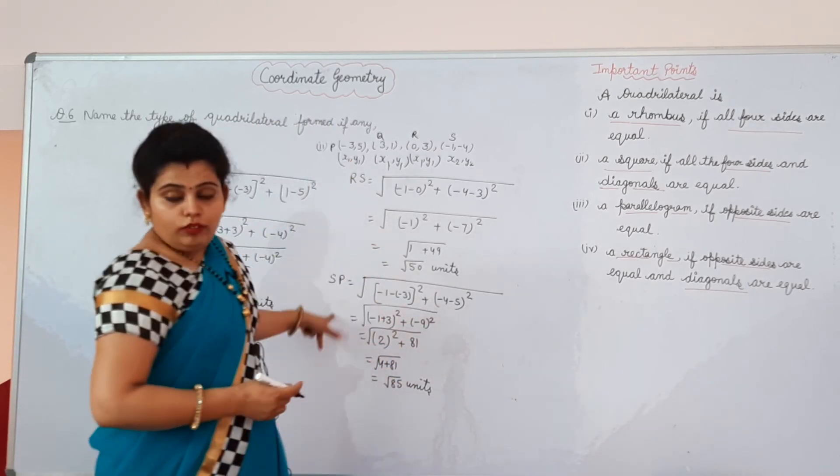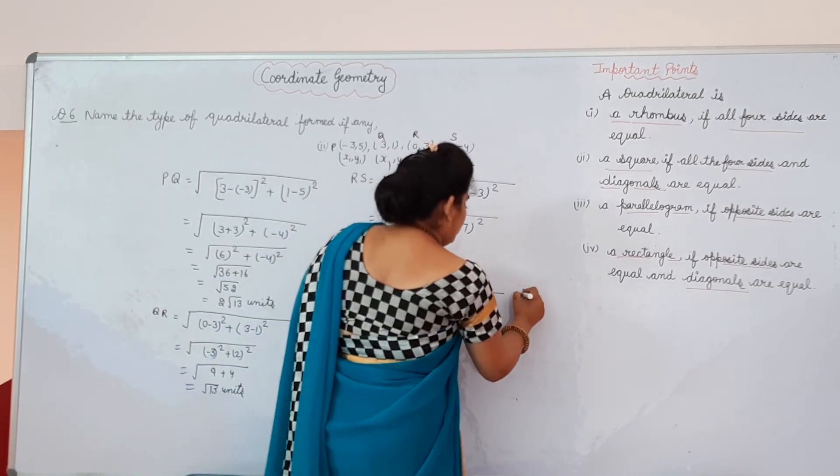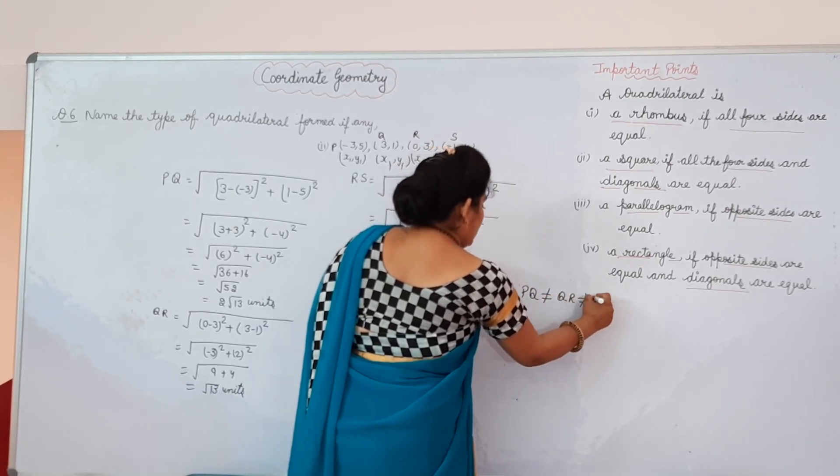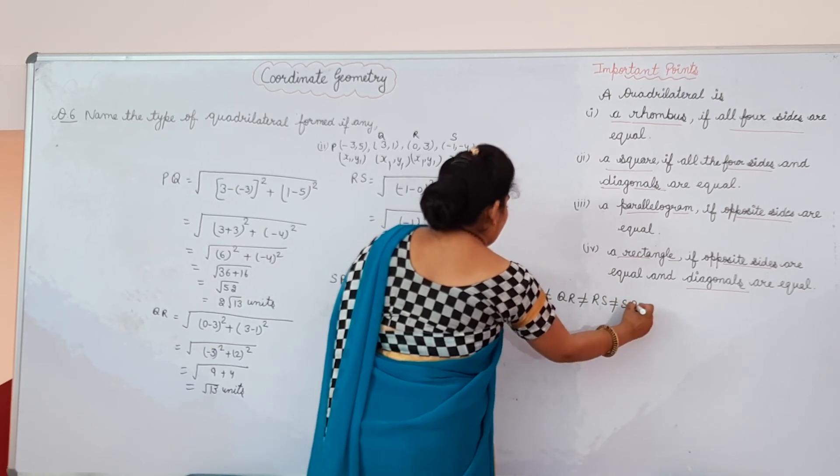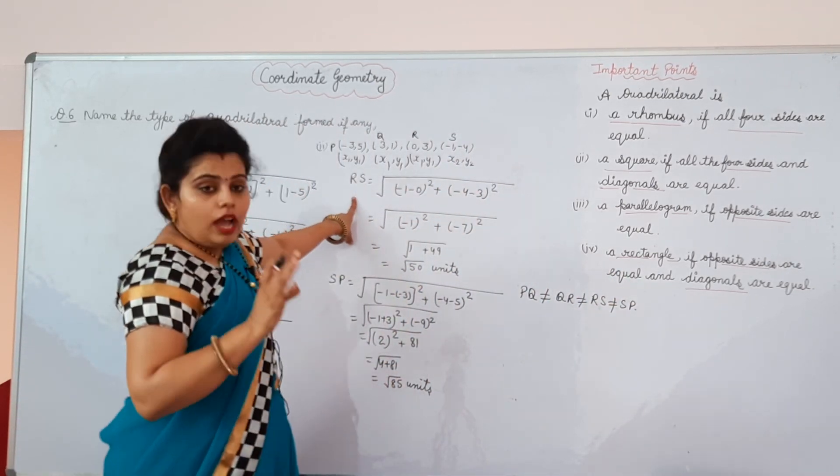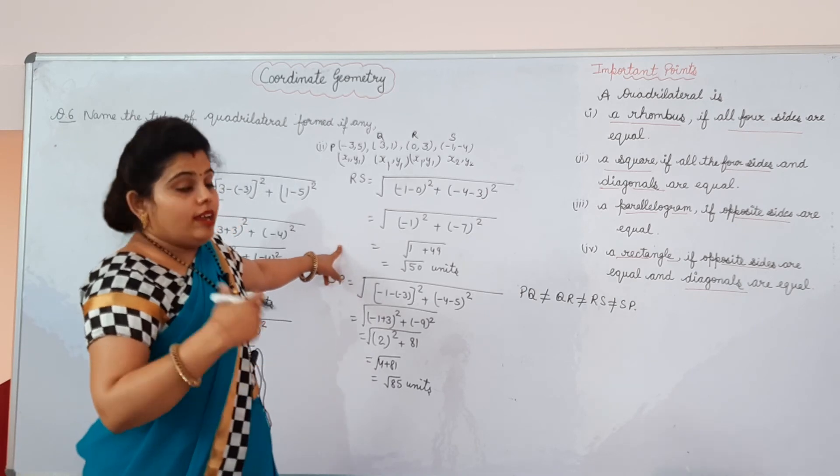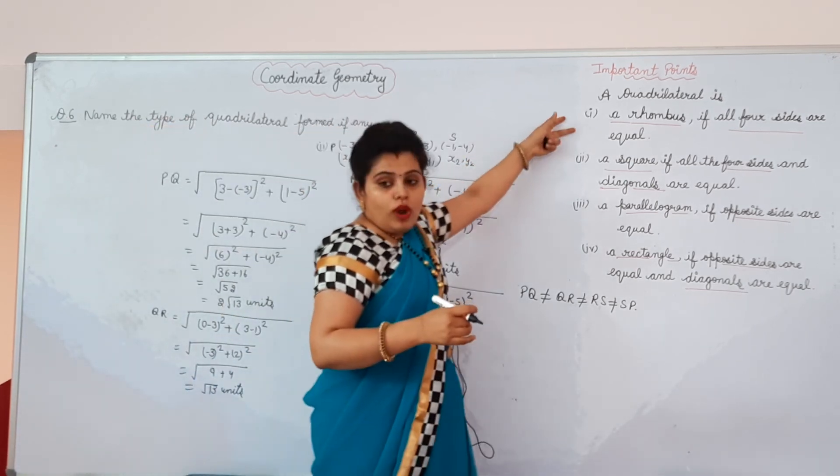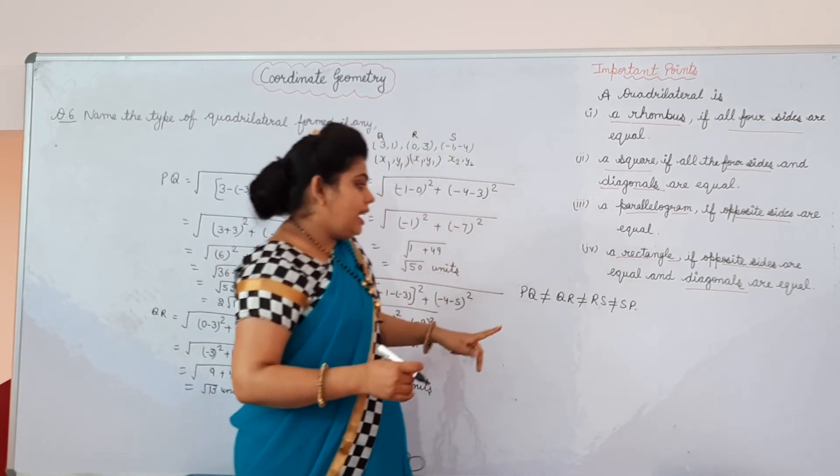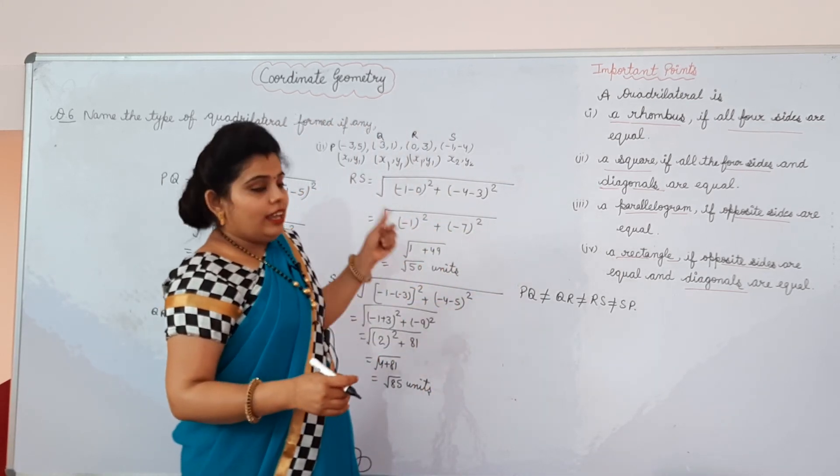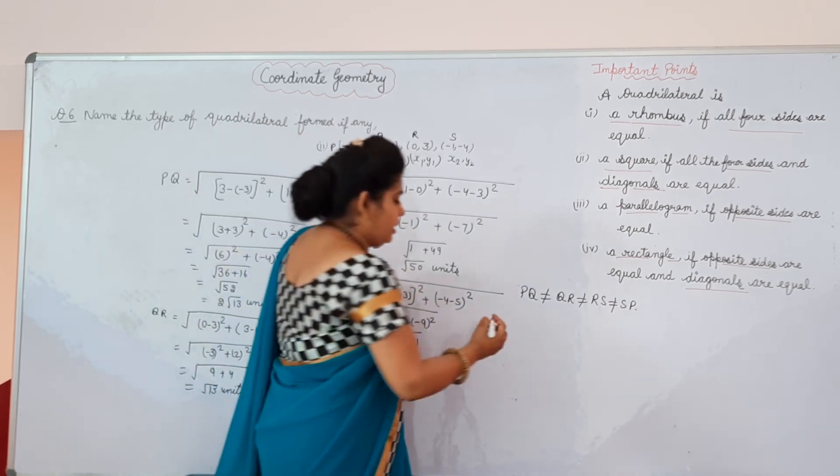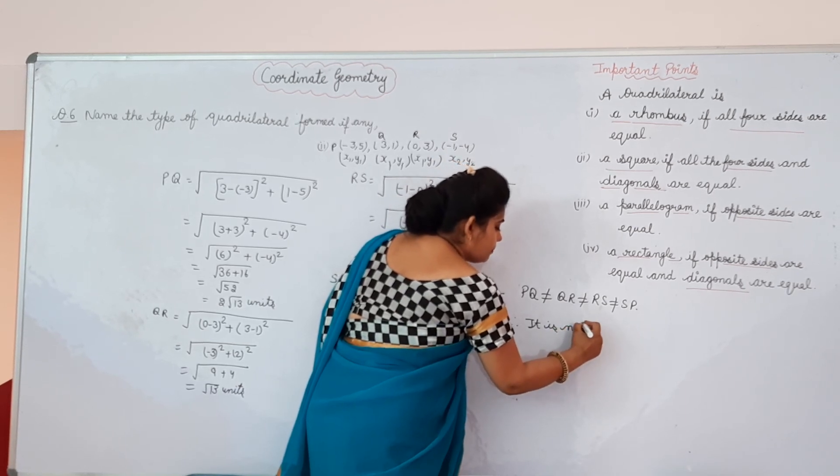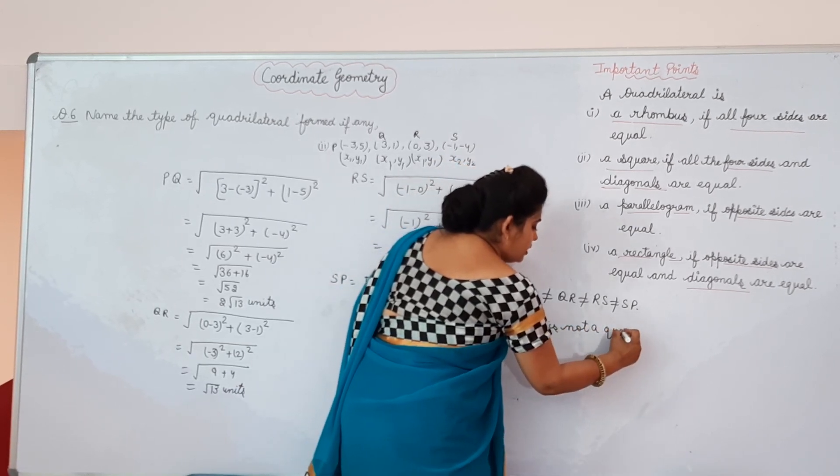What we have seen - no side is equal. PQ not equal to QR, not equal to RS, not equal to SP. Even opposite sides are not equal, not all sides are equal. In this quadrilateral it doesn't follow any property. Then we can say that here it is not possible to form a quadrilateral, or we can write it is not a quadrilateral.